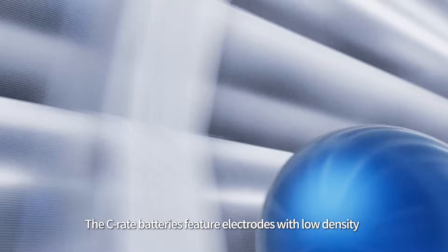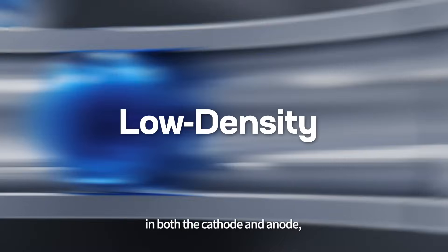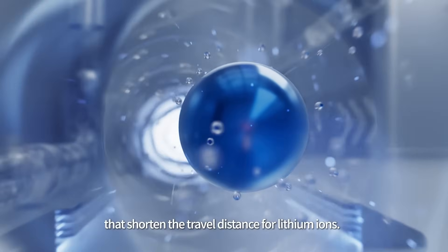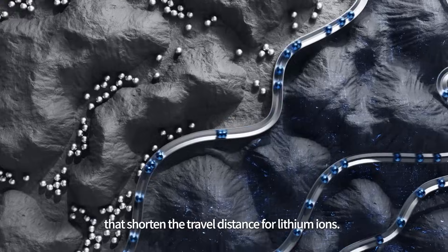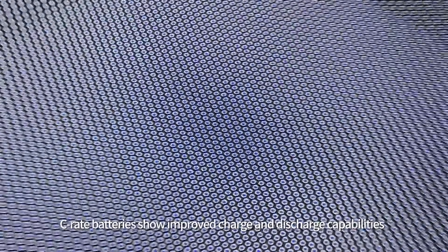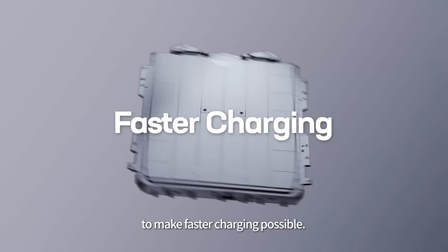The C-rate batteries feature electrodes with low density in both the cathode and anode, resulting in thinner electrodes that shorten the travel distance for lithium ions. Consequently, C-rate batteries show improved charge and discharge capabilities to make faster charging possible.